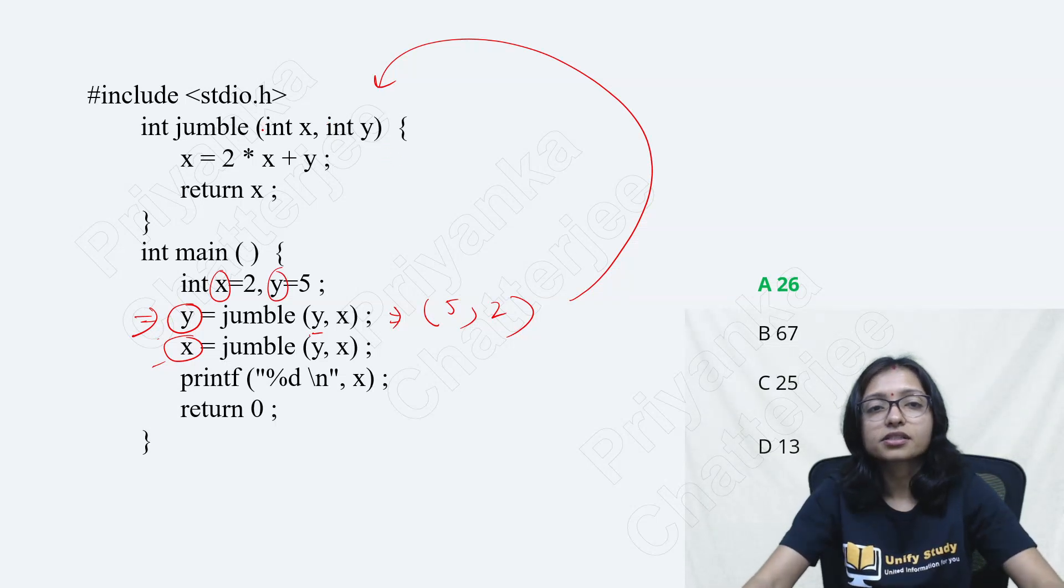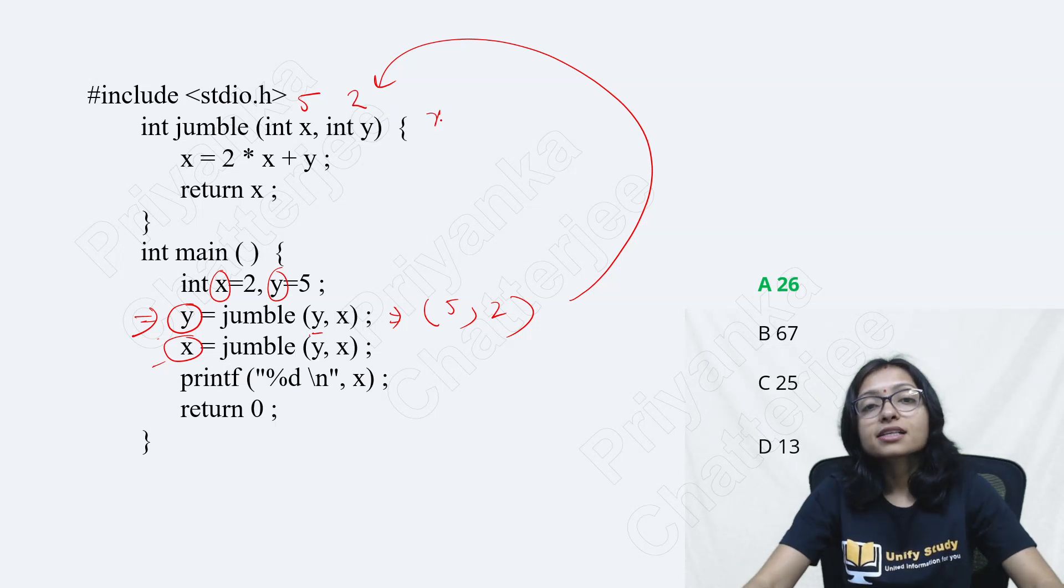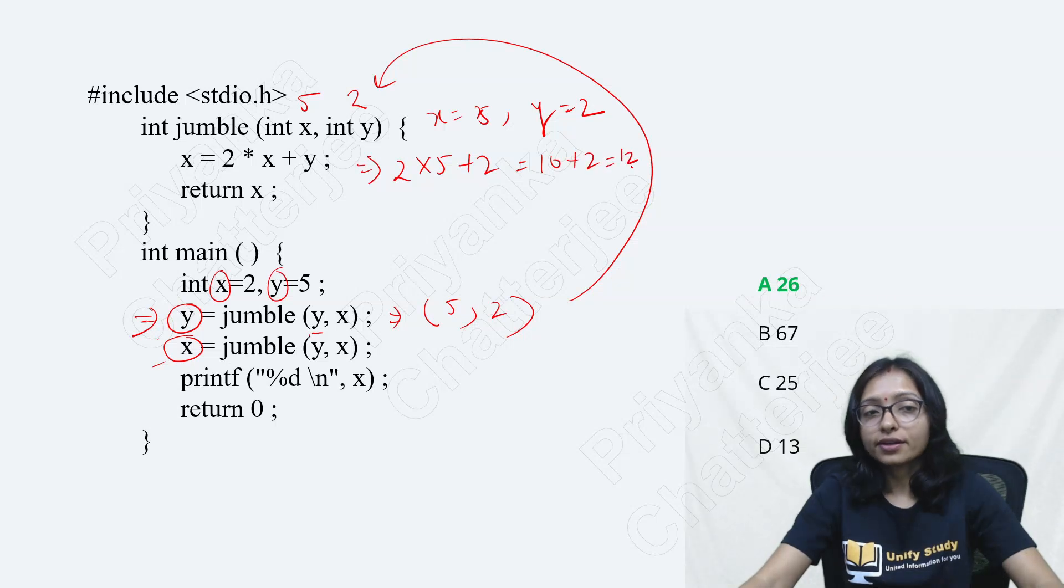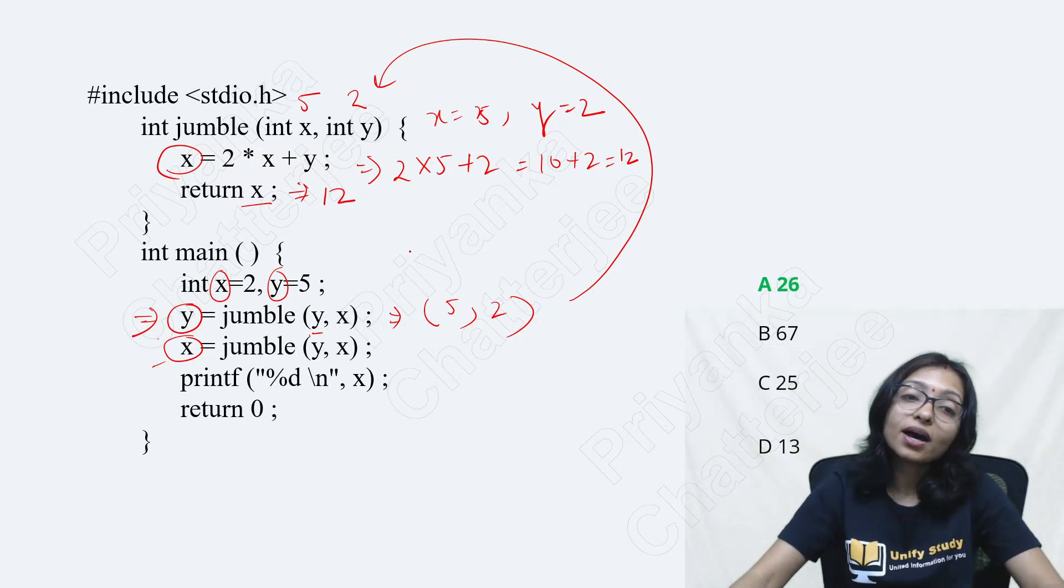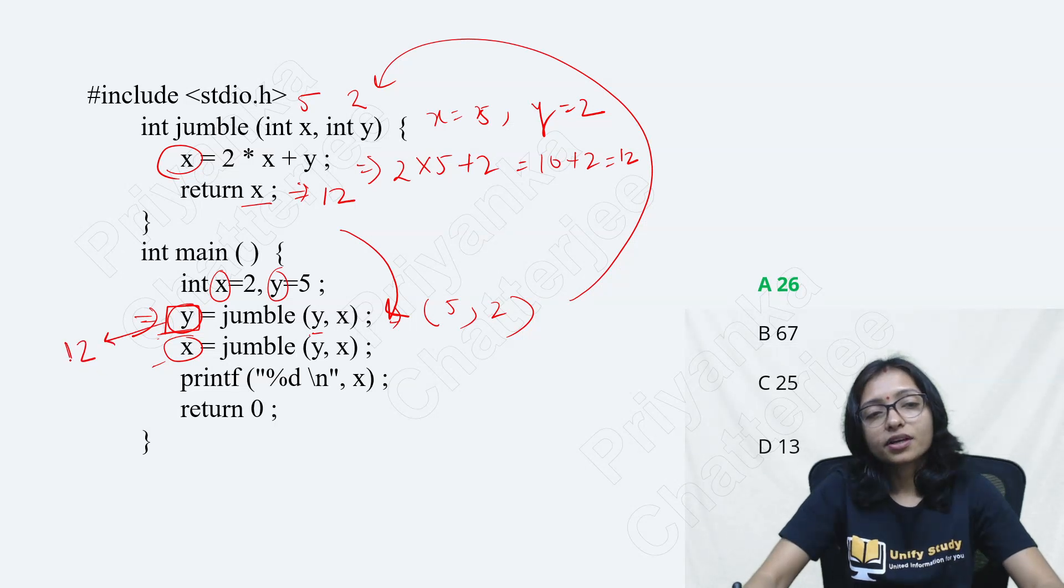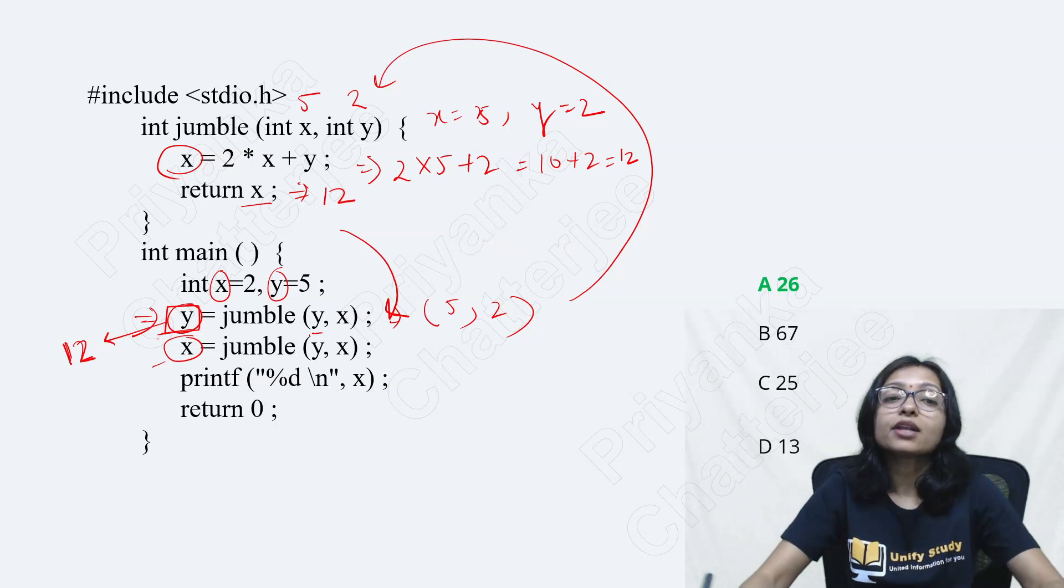It is 5, this is 2. So X value is 5 here, Y value is 2 here. That is why it will be 2 multiply 5 plus 2. That means it is 10 plus 2, 12. What is this? X equals to 12. So return X means you are going to return 12. Where you are returning? You are returning here. This return will be stored in Y. Means now, Y value is 12 here. The return is storing here. Means Y value is 12 here.